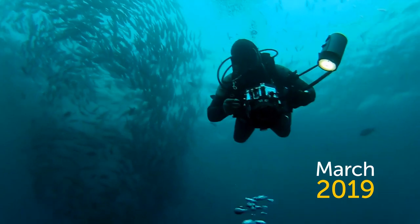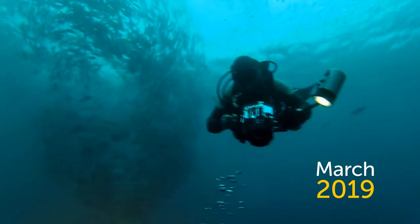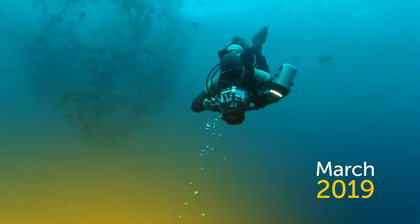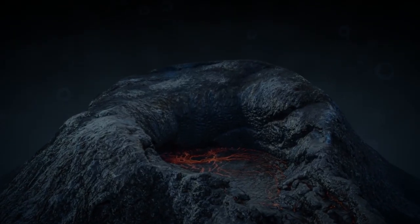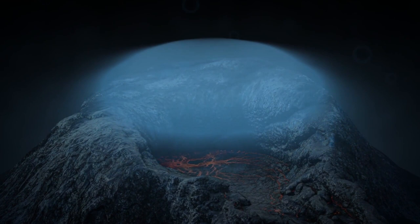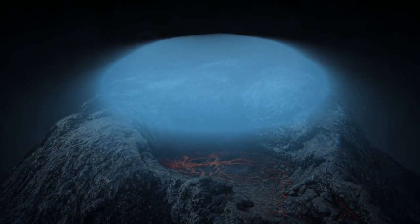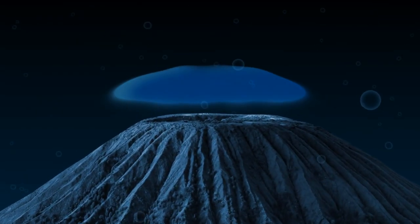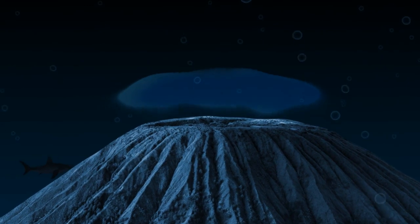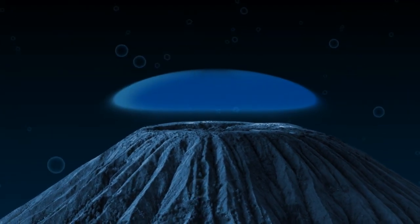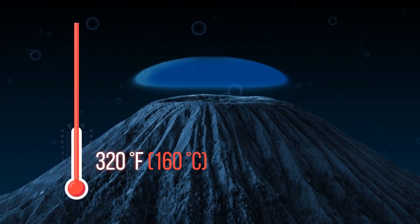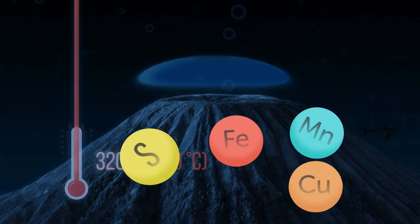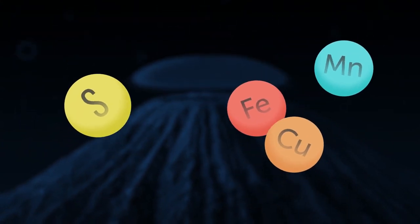Back in March 2019, scientists stumbled upon one of the most baffling phenomena ever found in the sea. During the exploration of an underwater volcano, they noticed what looked like a small lake — upside down — at least 6,500 feet below sea level. It turns out it was nothing more than an optical illusion generated by the liquid in these upside-down pools. It gets up to 320 degrees Fahrenheit hot and is made of harsh chemicals like sulfur and metals, which makes the illusion possible.